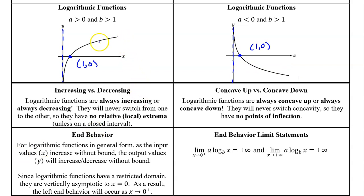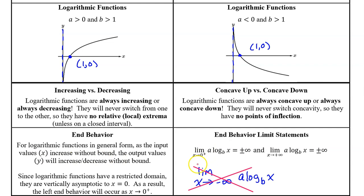Because logarithmic functions approach the y-axis asymptotically, the left-end behavior limit statement will always begin with the limit as x approaches zero from the right. Approaching zero from the right is always denoted with a little plus sign superscript. Be careful — we will not say the limit as x approaches negative infinity for the left-end behavior of a log function, because a log curve does not approach negative infinity; it stops at the y-axis.